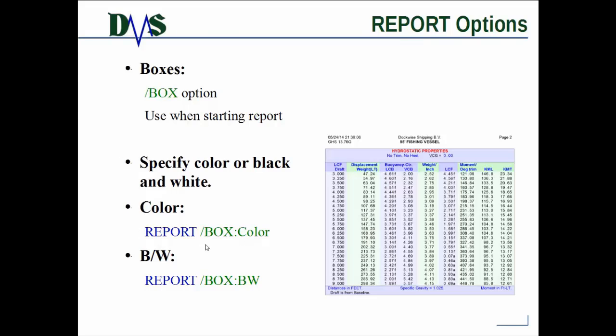So if you were to turn on a color box it would be report, you'd put your file name in here and then forward slash box colon color. If you just want black and white it's forward slash box colon bw.